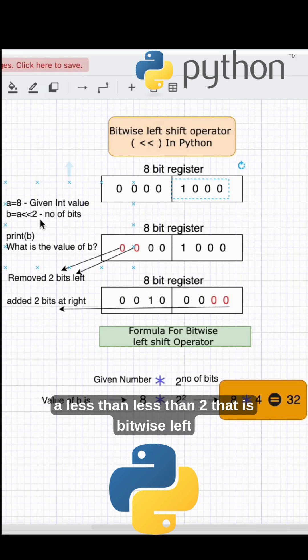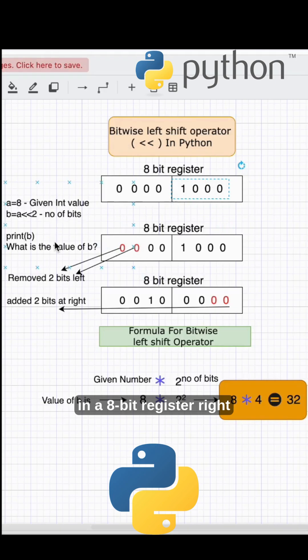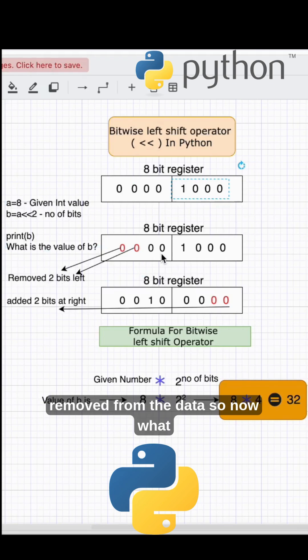What is the value of b, a left shift 2? That is bitwise left shift operator. Now you can see this example in an 8 bit register. I have taken two left side bits - they will be flipped off or removed from the data.